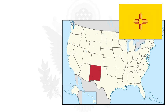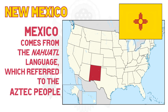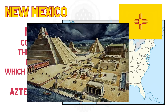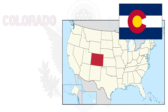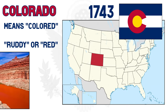Back south, New Mexico. This one is pretty straightforward — from the Spanish Nuevo México, meaning 'the new Mexico.' In turn, the name Mexico comes from the Nahuatl native language, which referred to the Aztec people who founded the city of Tenochtitlan. Colorado was also named by the Spanish in 1743. It roughly means 'colored,' but in this case it meant 'ruddy' or 'red,' originally referring to the Colorado River and its muddy color.